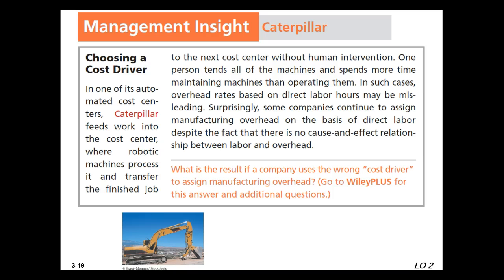In one of Caterpillar's automated cost centers, robotic machines process work and one person tends all the machines, spending more time maintaining them than operating them. In such cases, overhead rates based on direct labor hours may be misleading. Some companies continue to assign manufacturing overhead on the basis of direct labor hours despite there being no cause-and-effect between labor and overhead — oftentimes, machine hours would be more applicable.